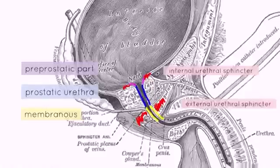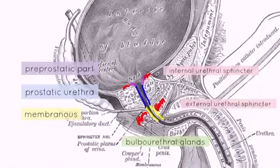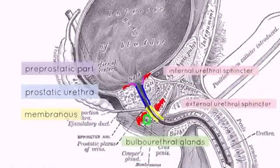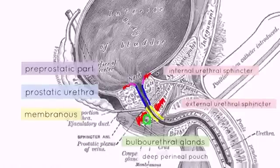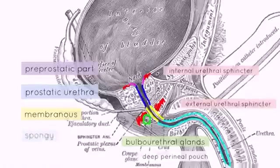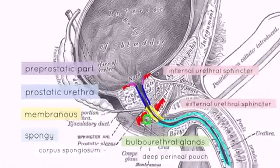The bulbourethral glands lie surrounded by the external urethral sphincter. These are pea-sized glands which lie within the deep perineal pouch, posteriorly and laterally to the membranous part of the urethra. The final part of the urethra is the spongy part, which is surrounded by the corpus spongiosum of the penis — the erectile tissue of the penis.